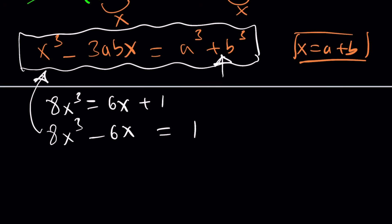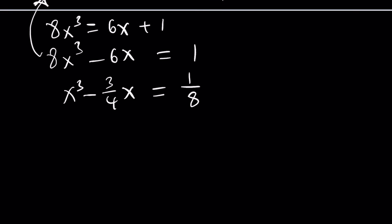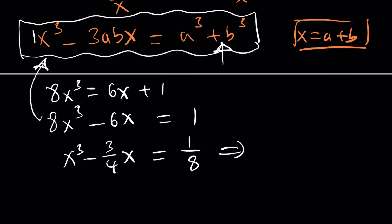So how do you put that in that form? Well first of all notice that the coefficient of x cubed should be 1. So we don't want the 8. So let's divide everything by 8. 6 divided by 8 is 3 fourths and 1 divided by 8 is 1 eighth. Now what are we going to do? Use the cubic formula. Great. So in this case you want 3ab to be 3 fourths which means ab is going to be 1 fourth.